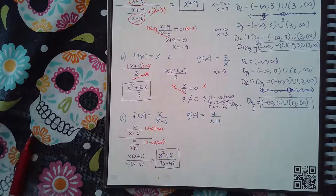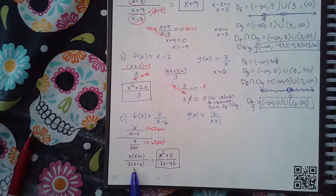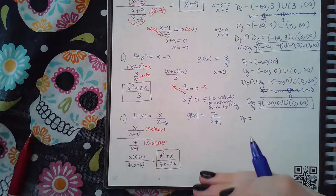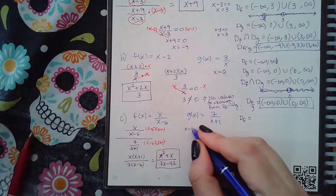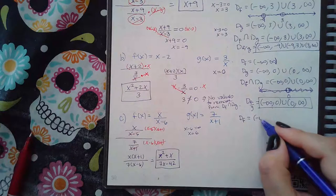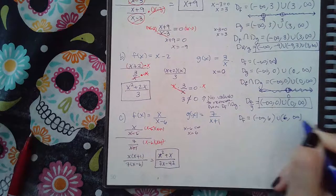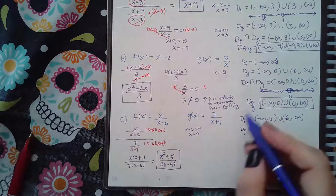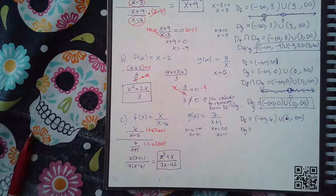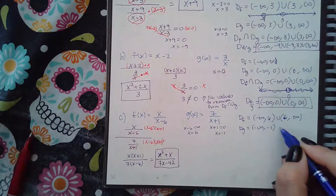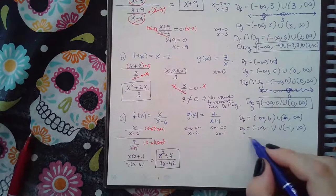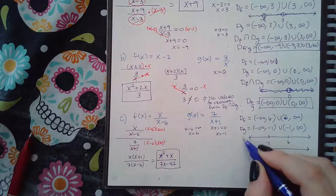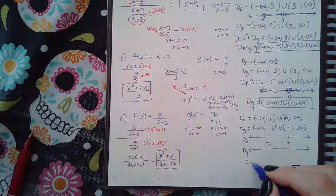That is as far as I can simplify. For the domain, the domain of f is all real numbers except where the denominator equals zero. Setting the denominator equal to zero gives x = 6, so the domain of f is negative infinity to infinity with 6 removed. The domain of g is all real numbers except where its denominator equals zero, giving x = −1 excluded — so negative infinity to −1, then −1 to infinity.